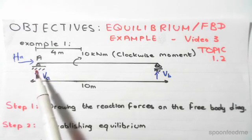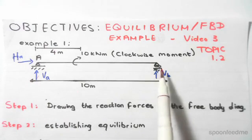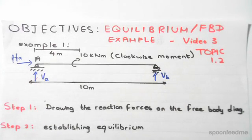So we have a pin support on the left hand side and a roller support on the right hand side. This is known as a simply supported beam - a pin and a roller, that's it, that's a simply supported beam.